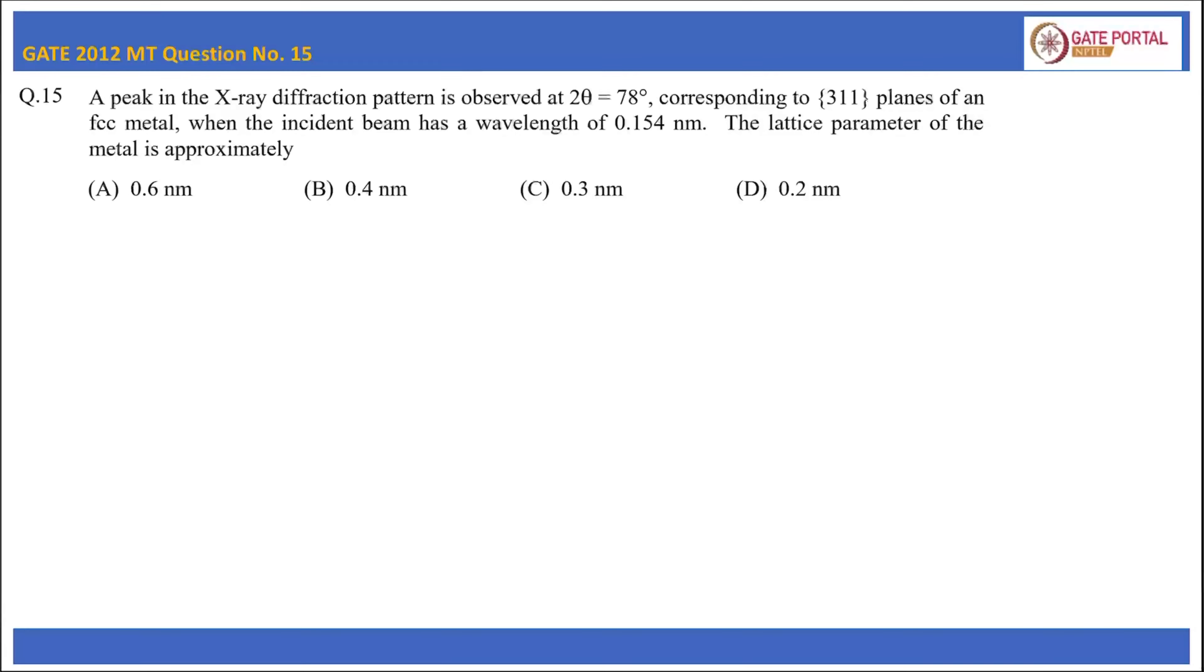This is question number 15 of GATE 2012 Metallurgical Engineering. A peak in the X-ray diffraction pattern is observed at 2θ = 78° corresponding to (311) planes of an FCC metal when the incident beam has a wavelength of 0.154 nanometer. The lattice parameter of the metal is approximately: option A 0.6 nanometer, option B 0.4 nanometer, option C 0.3 nanometer, and option D 0.2 nanometer.